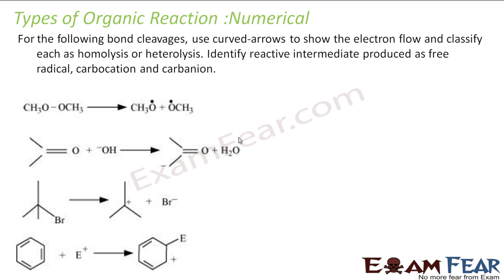So here we have to, for this bond cleavage, we have to show the arrow to show the electron flow. So if you see, it is a free radical. So it will be by the fishhook actually. This bond broke and both of these got one electron each. Fishhook arrows.